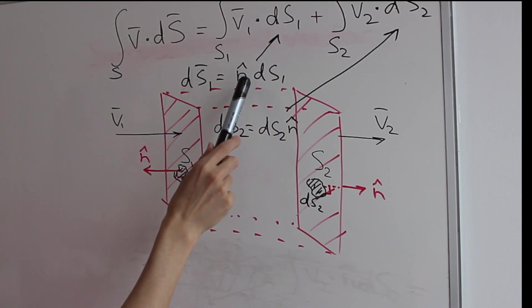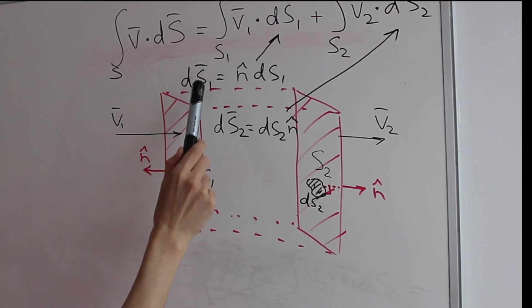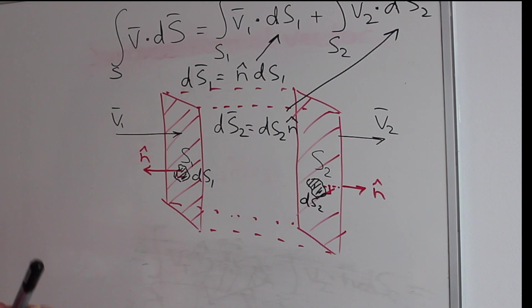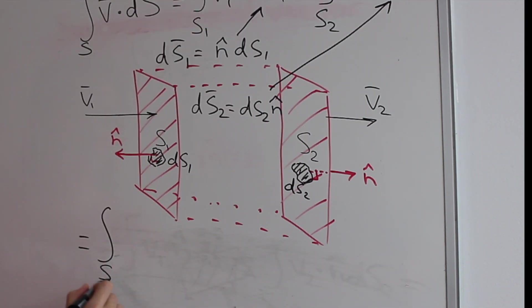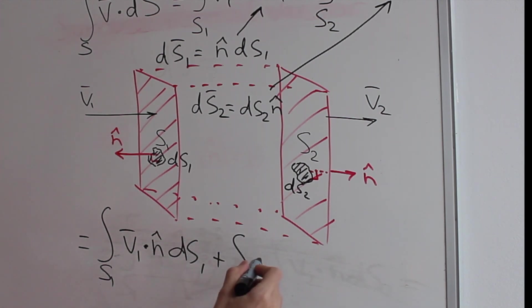So now we're plugging in our expressions for surface vector into the integral. The integral of the surface s1 velocity of air v1 dot n hat ds1. Now it's not a vector anymore. Plus integral over the surface s2 of velocity vector v2 dot n hat. Actually let's call them n1 and n2 because they are different, right? It's not the same vector ds2.